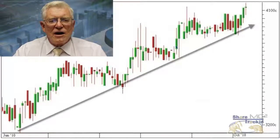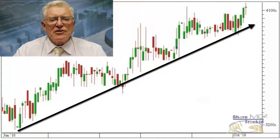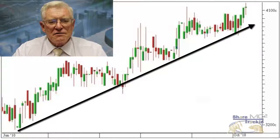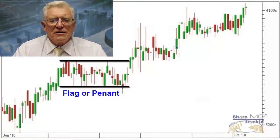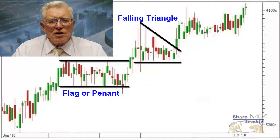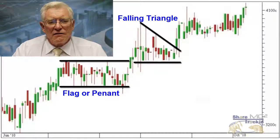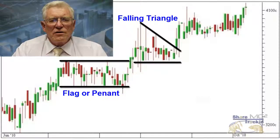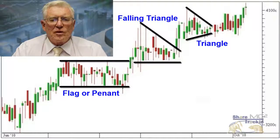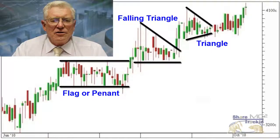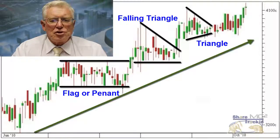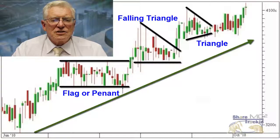Here you can see a rising trend and in that rising trend there are a number of different formations. The first formation is called a pennant or a flag and is basically a standard sideways market between two horizontal trend lines. The second formation is a falling triangle where the upper trend line is falling. Sometimes it's also called a wedge. The third formation is a normal triangle between rising and falling trend lines.